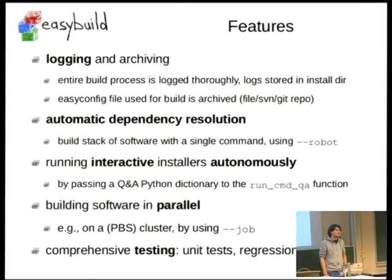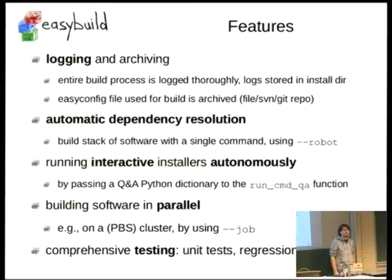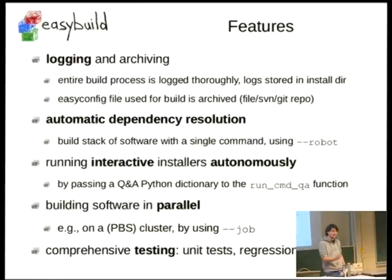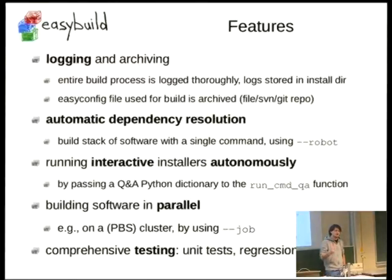Since we have a huge cluster, we have lots of machines to do builds. If you have a new system, you can just run one command with '--job' and we'll use our cluster scheduling software to build a dependency tree and push all software builds to the cluster. Come back 48 hours later and all the software that was available on the old system is now available. We also try to do comprehensive testing — before every release of EasyBuild, we build all the software we have to check if everything still works as expected.